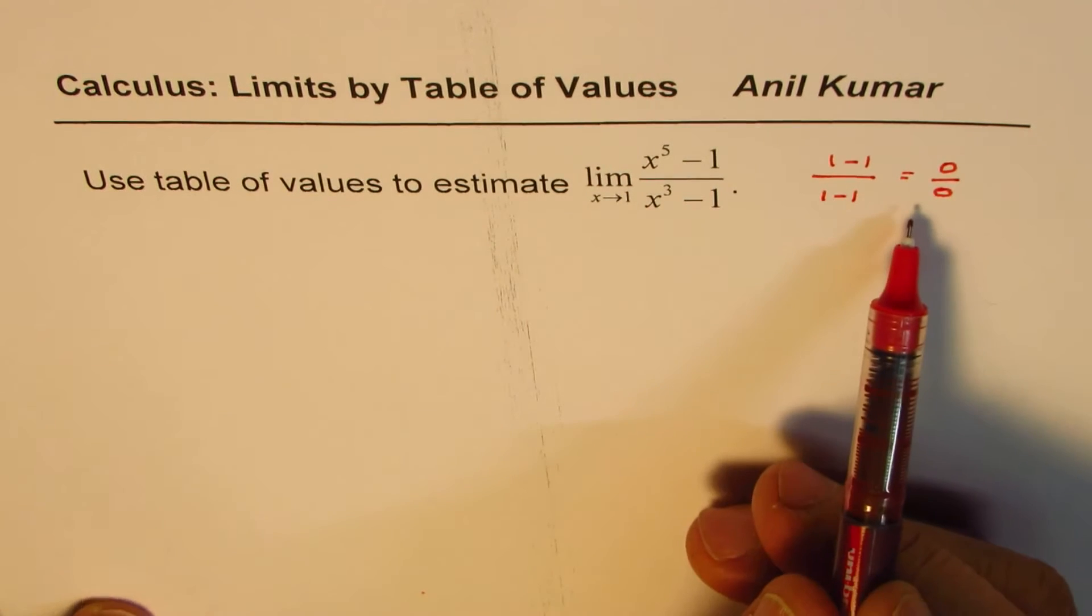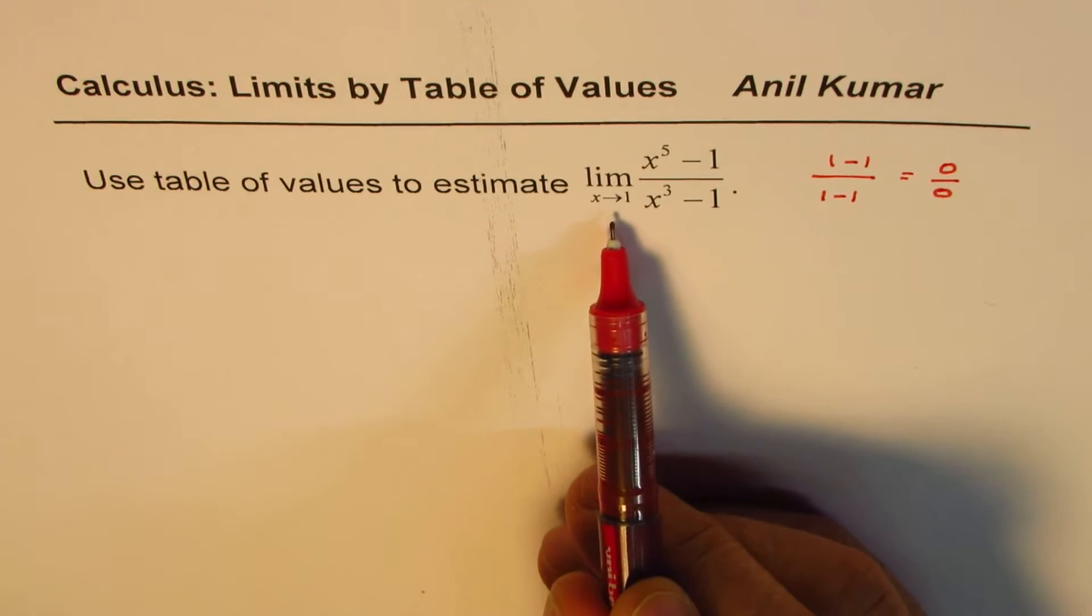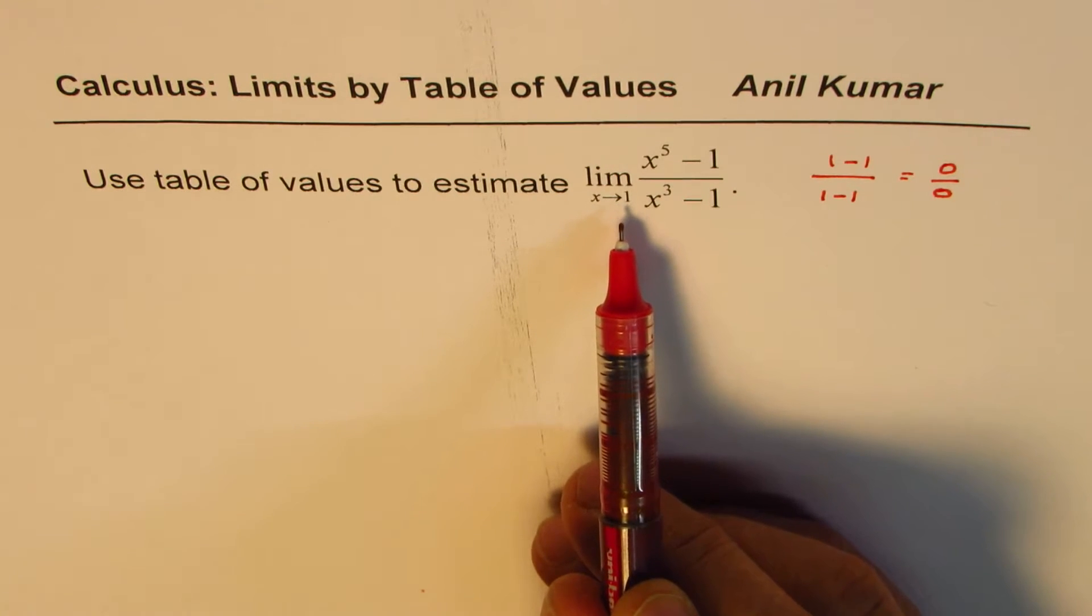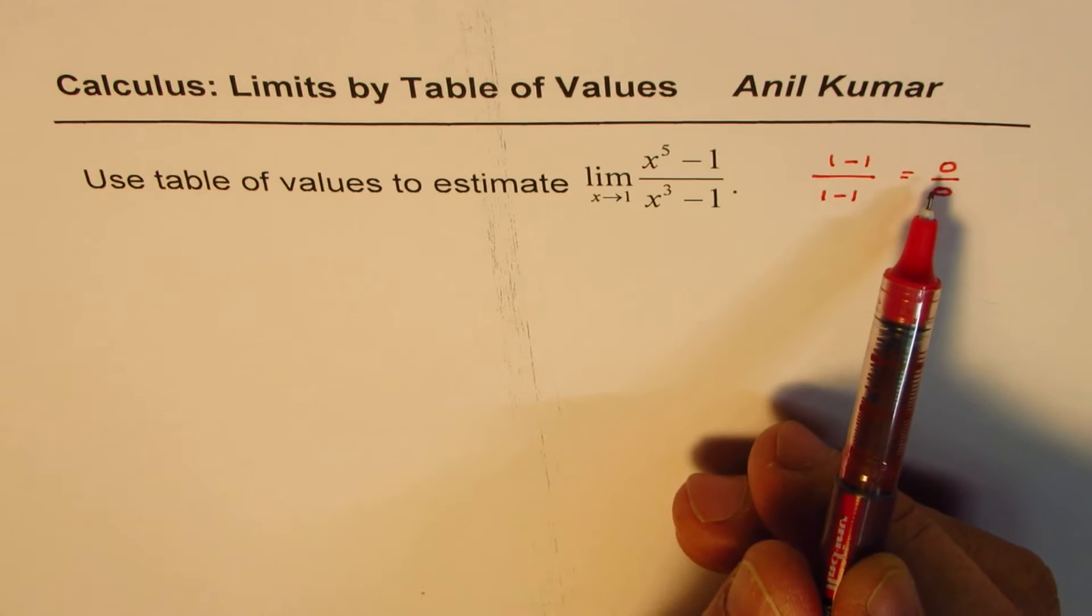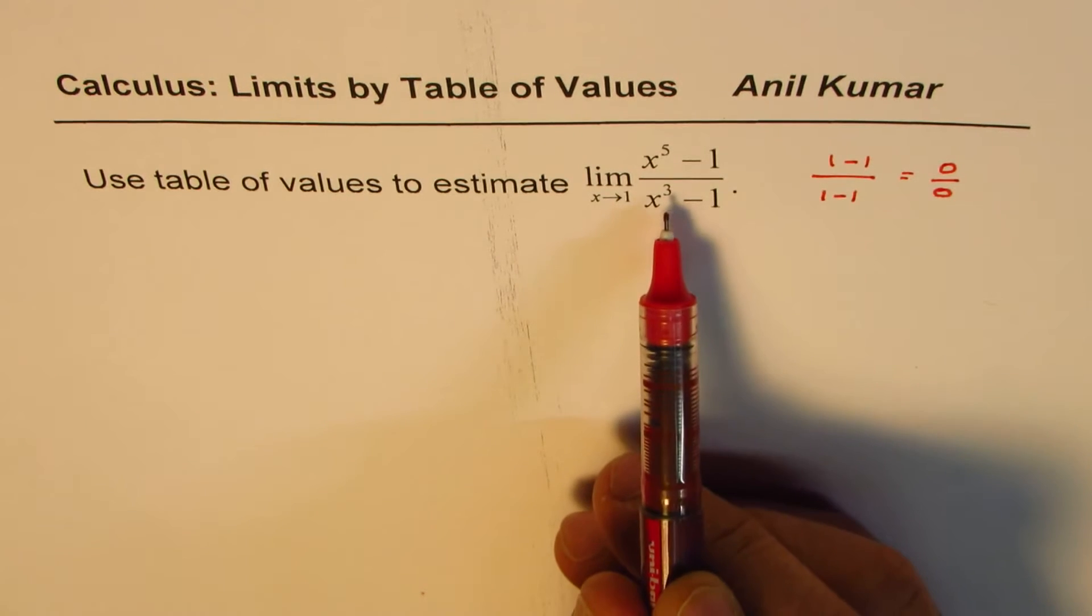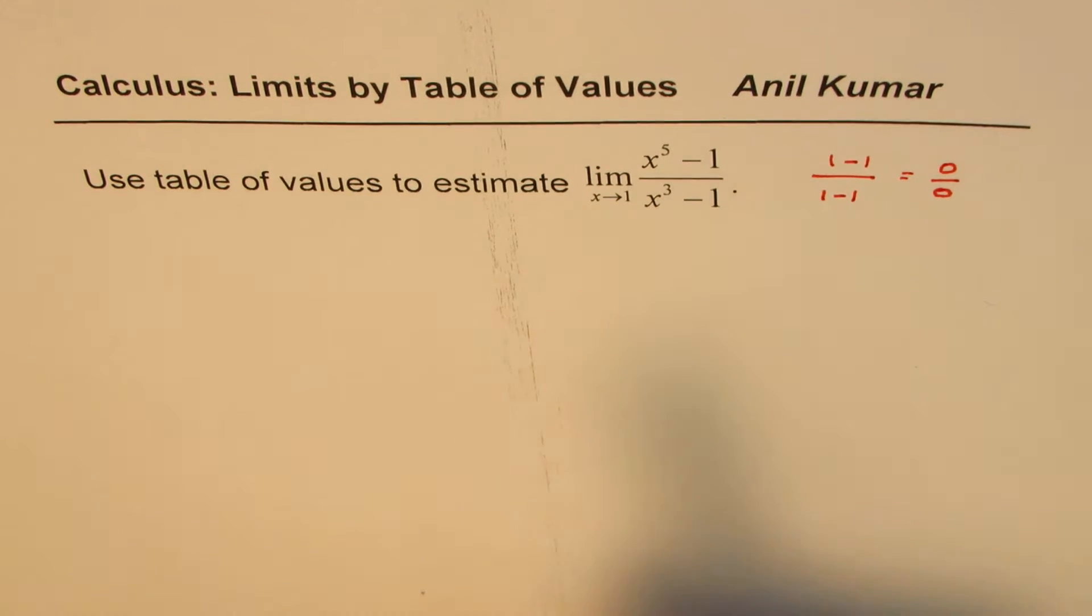limit is not the value of the function at the point. Limit is the value it approaches as x approaches 1. So when we are very close to 1, what is the value of the function? This is what we are trying to understand. So this is the first thing which you should understand.